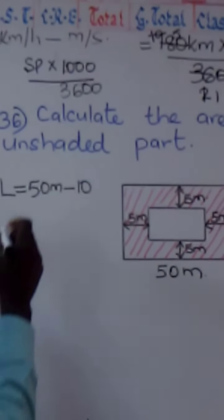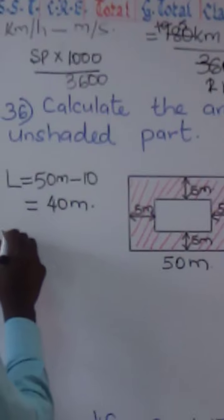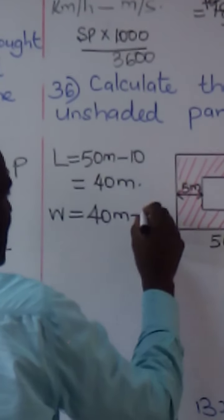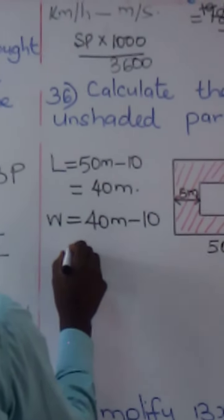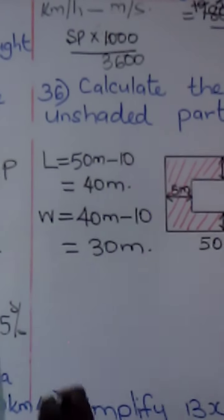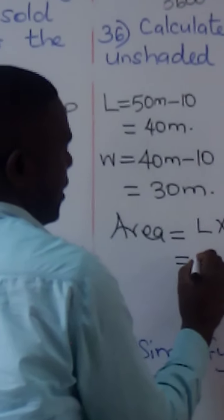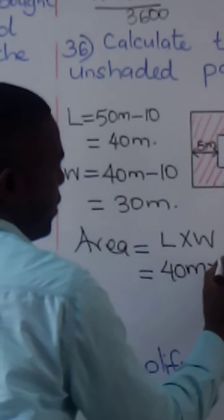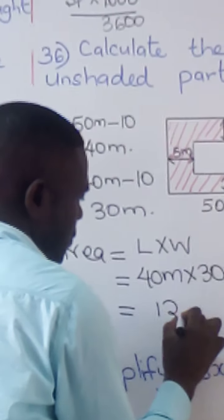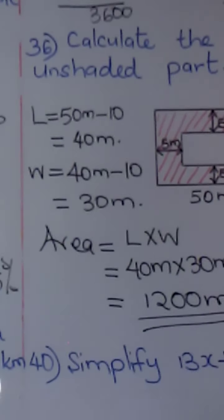So we subtract 10, and that length becomes 40 meters. We take the width of the bigger one, which is 40 meters, and again subtract 10, so the width becomes 30 meters. Now we find the area of the unshaded rectangle. Area of a rectangle equals length multiplied by width. The length is 40 meters and the width is 30 meters. When you multiply, you get 1,200 square meters. That is the area of the unshaded region.